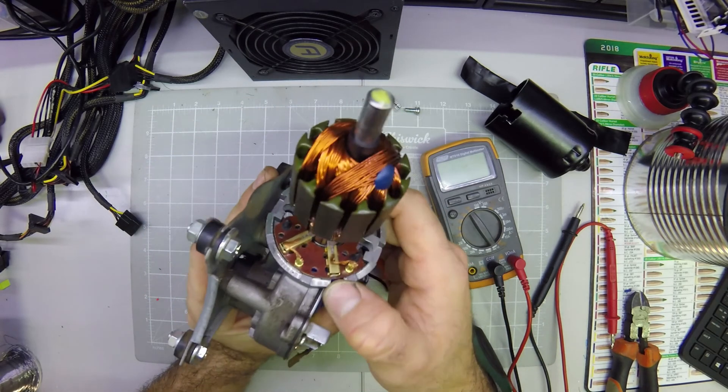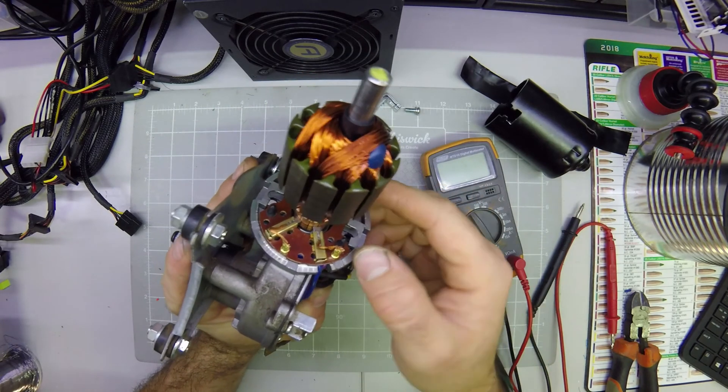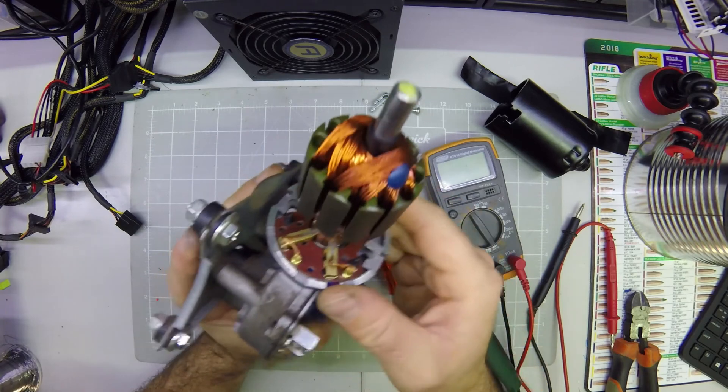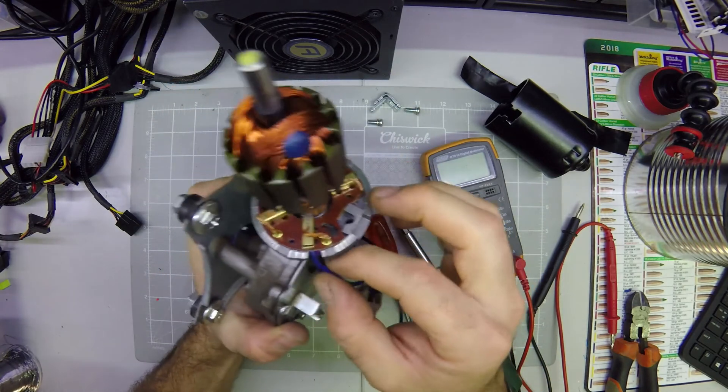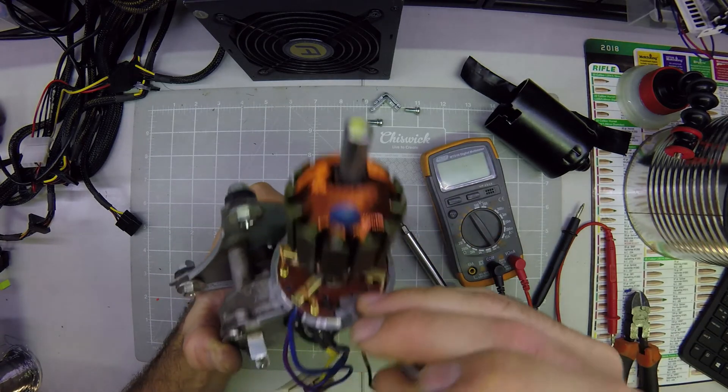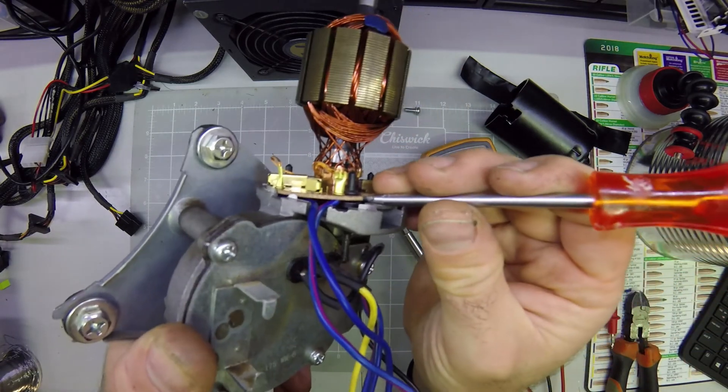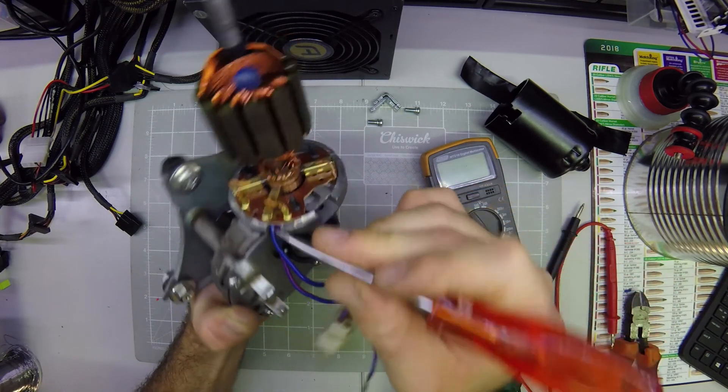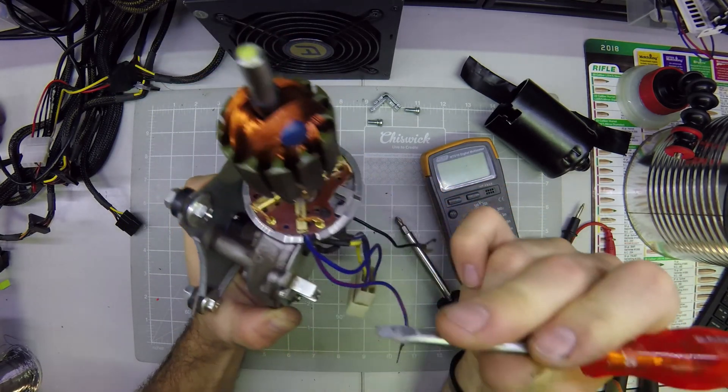The other two are for two different speeds. So you'll have a full speed and you'll have a half speed or an intermediate speed. So if we follow the wires, we can see that one of them goes to this brush over here and the other one goes to this brush over here.